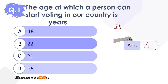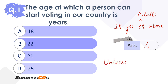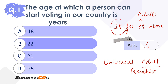It's a very simple question and it is definitely option A — 18 years. Those who are 18 years or above are known as adults. And what do we call this process? We call it universal adult franchise. It is the universal right for all adults, meaning people who are above 18 years, to be able to vote. So the correct answer here is option A.